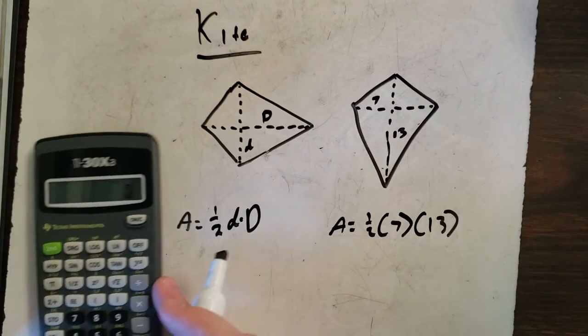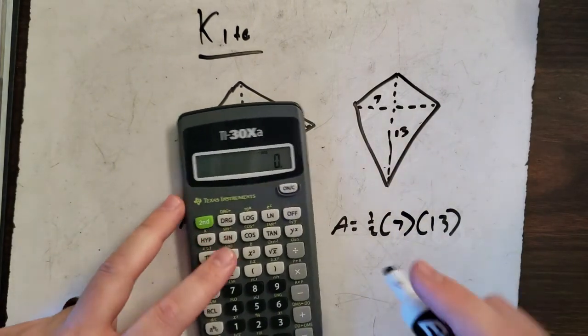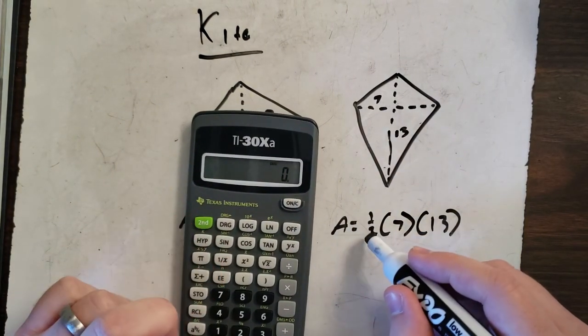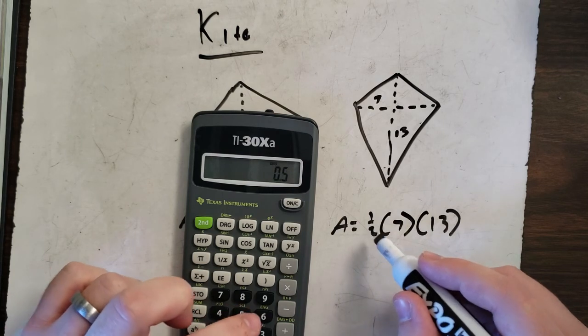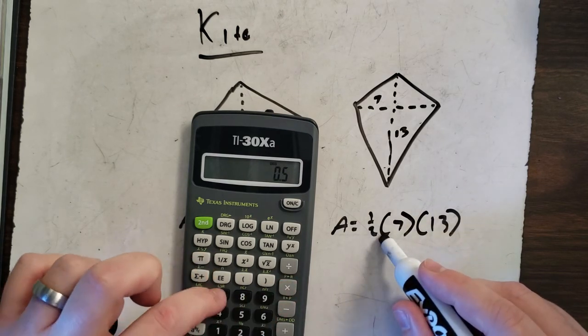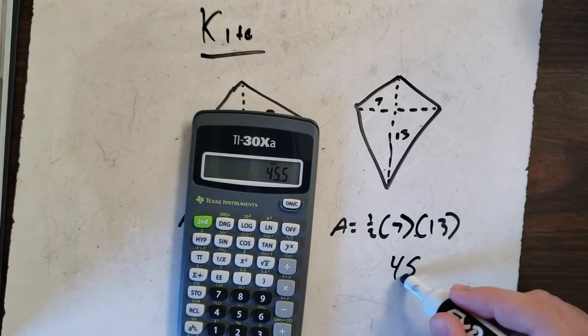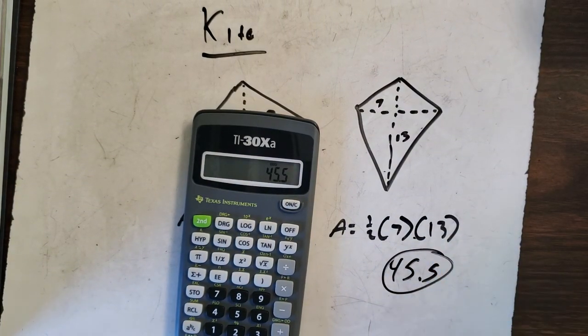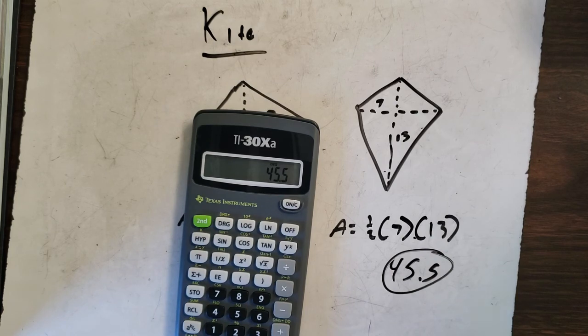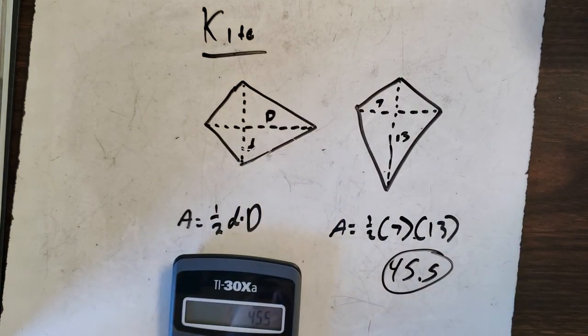So if we do the math. 1 half is 0.5 times 7 times 13. Our answer is 45.5. Simple as that. Don't get it complicated.